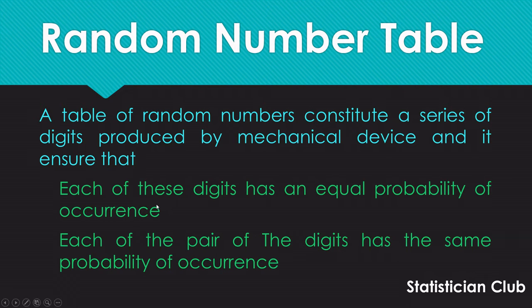First point, each of these digits has equal probability of occurrence and each pair of digits has the same probability of its occurrence to be selected as sample.